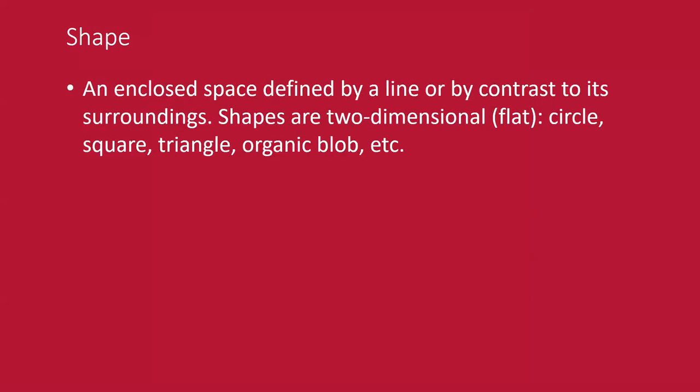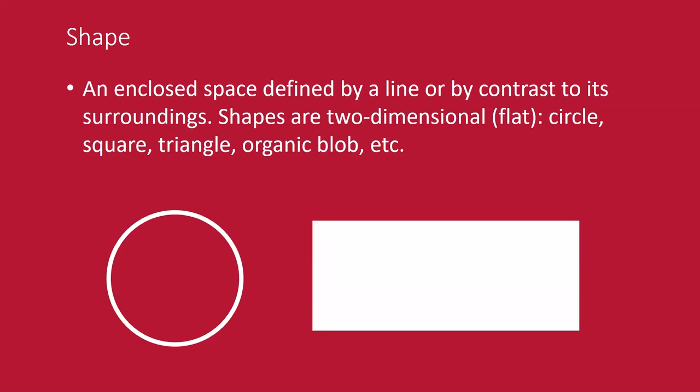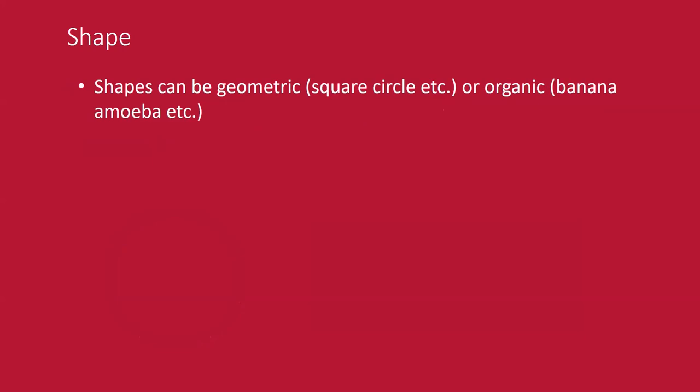A shape is an enclosed space defined by a line or by contrast to its surroundings. Shapes are two-dimensional — flat — like a circle, square, triangle, or organic blob. If you think of it, a shape is still a point and a line that has been enclosed, as we see with a circle and a rectangle. Shapes can be geometric or organic.